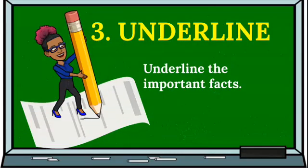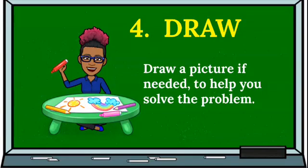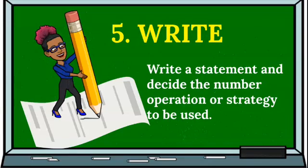Step 3: Underline. Underline the important facts. Step 4: Draw a picture if needed to help you solve the problem. Step 5: Write. Write a statement and decide the number operation or strategy to be used.